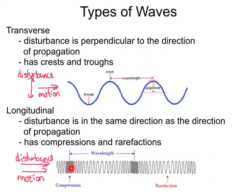Since we push on the slinky, we're going to compress some of the coils together, and this area will be called a compression. If some coils are compressed, there are going to be other areas where the coils are further apart — these areas are called rarefactions. So, a transverse wave has crests and troughs, while a longitudinal wave has compressions and rarefactions.